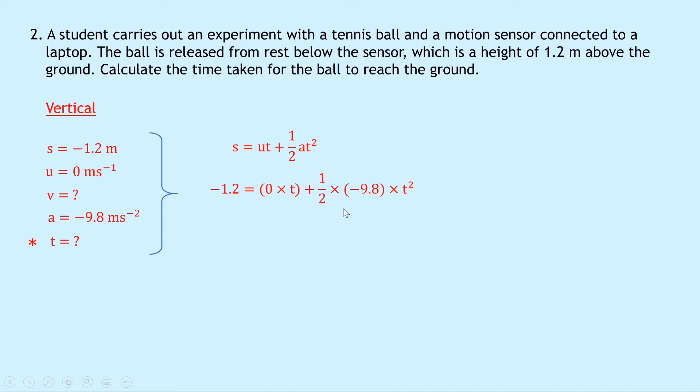And if we simplify both sides by multiplying both sides by 2 first of all to get rid of this fraction, and then we can divide both sides by minus 9.8, we end up with t squared equals 0.24. The reason we've now got a positive value is because we had a negative on that side and a negative on that side. So they're going to cancel out. And lastly, we need to take the square root of both sides, so we get t equals 0.5 seconds.